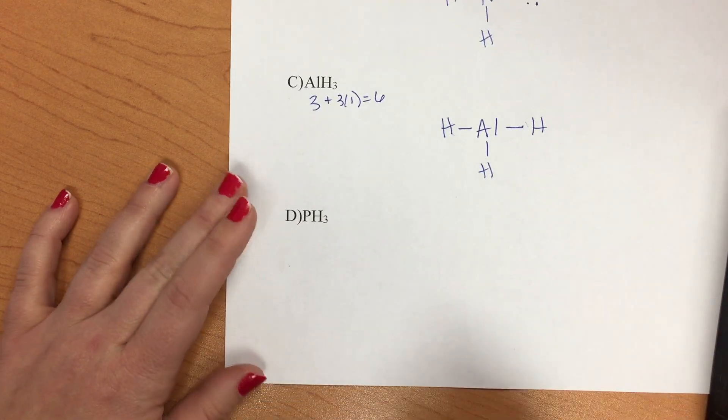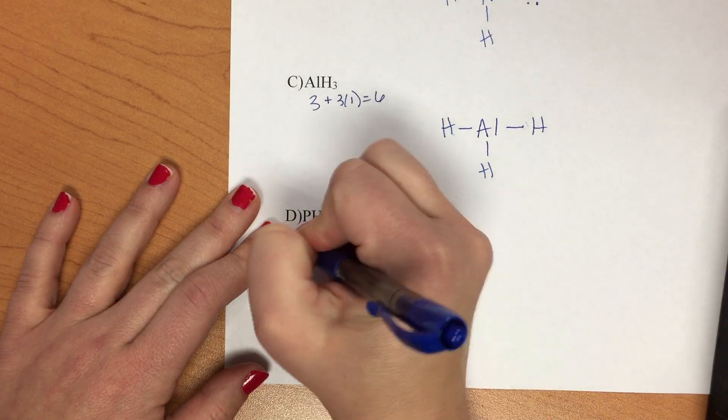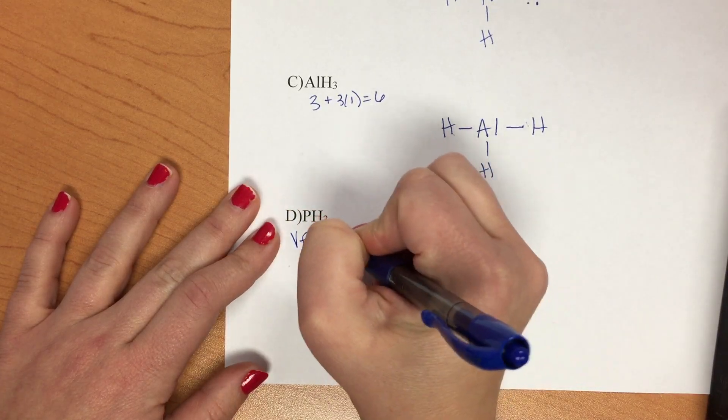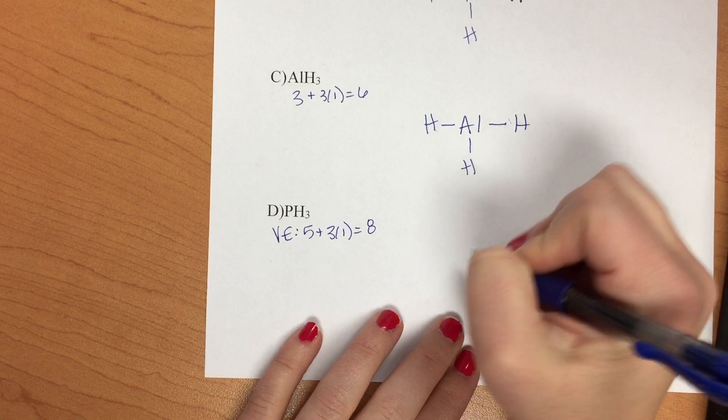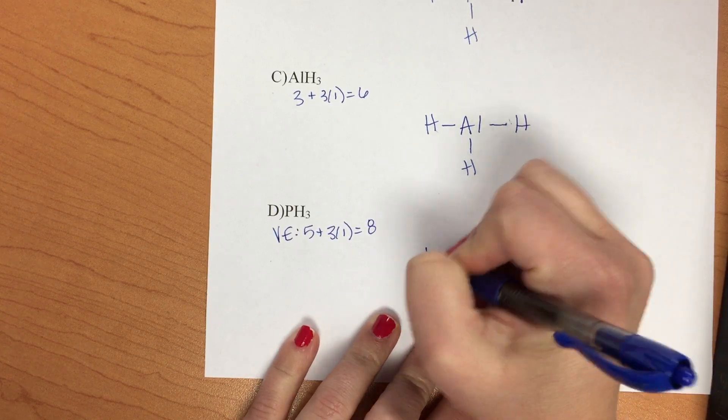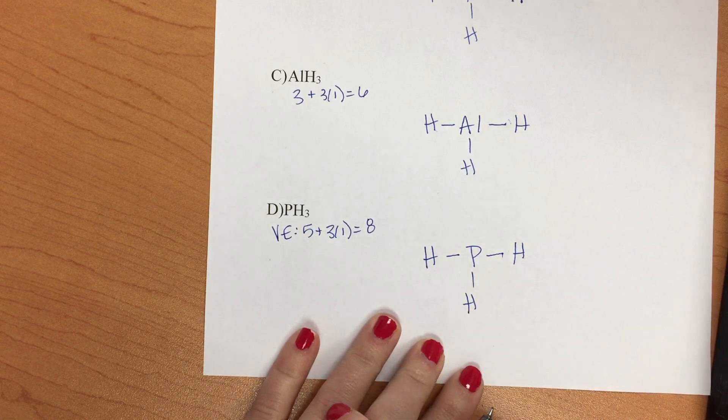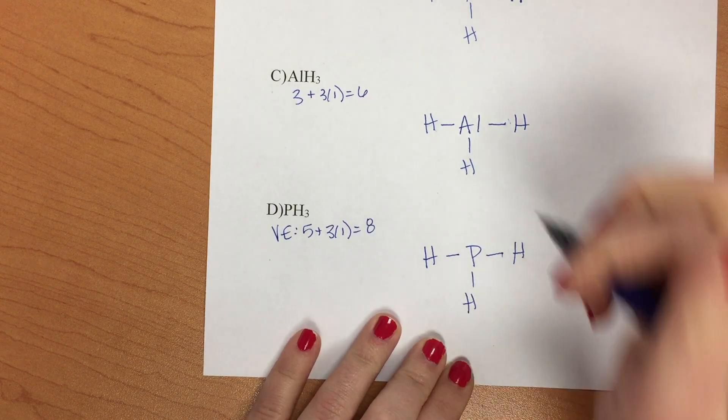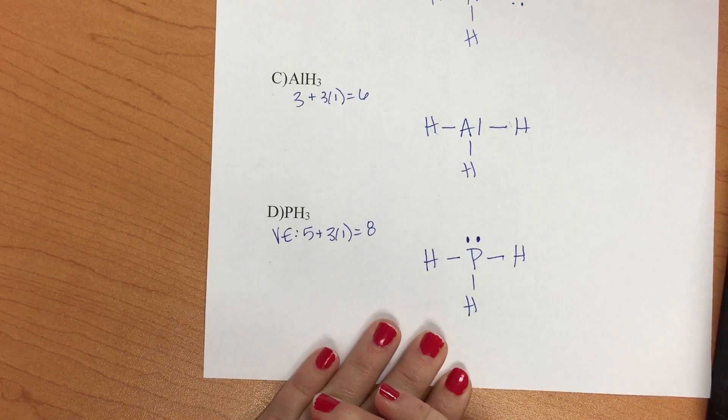Last but not least, we have one more. Your valence electrons are going to be 5 plus 3 times 1, which is equal to 8. All right. Phosphorus is our central atom. Add our exterior. All three of these now have octet, so we've used up six of our electrons. The last two end up on our central atom.